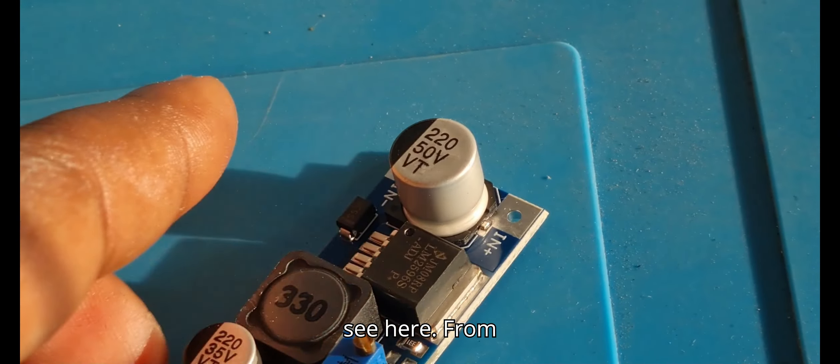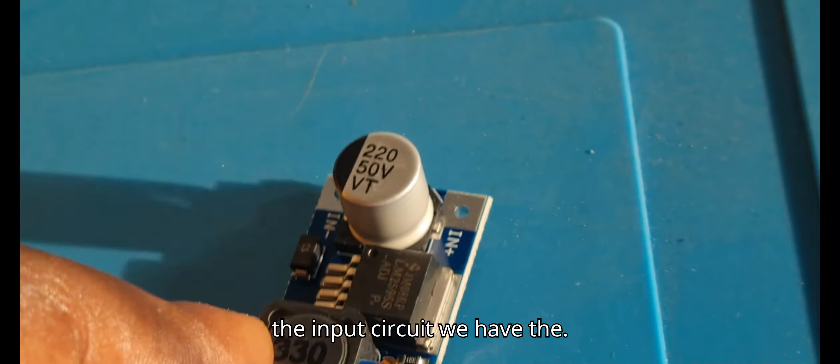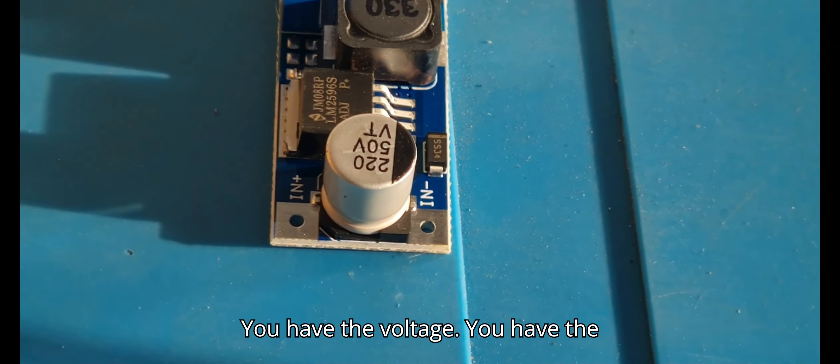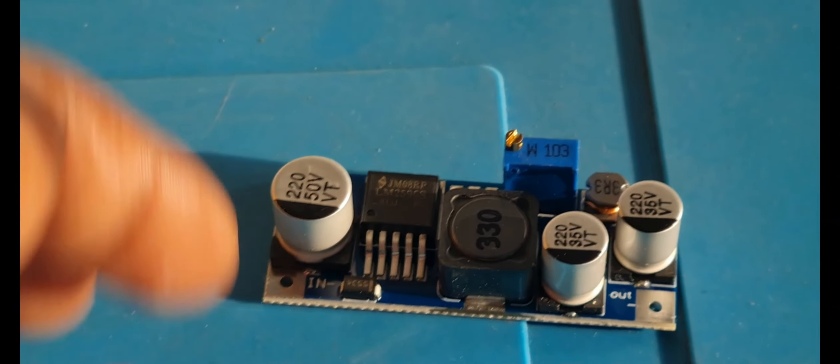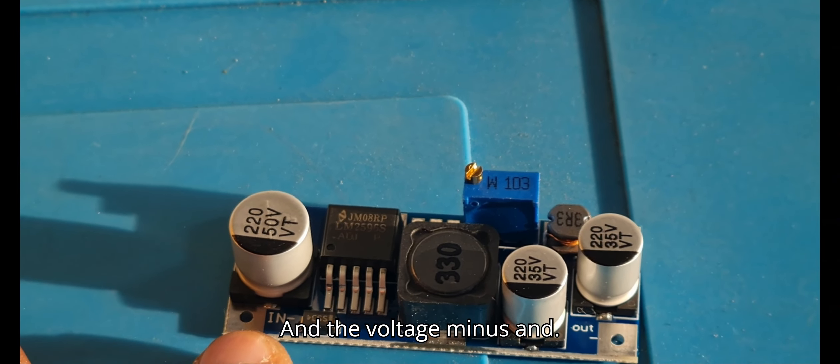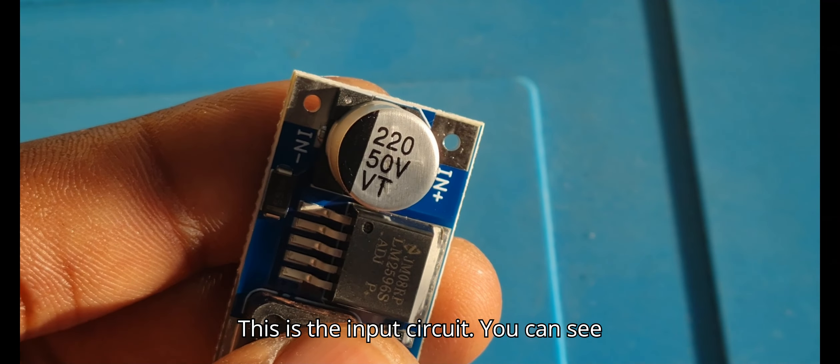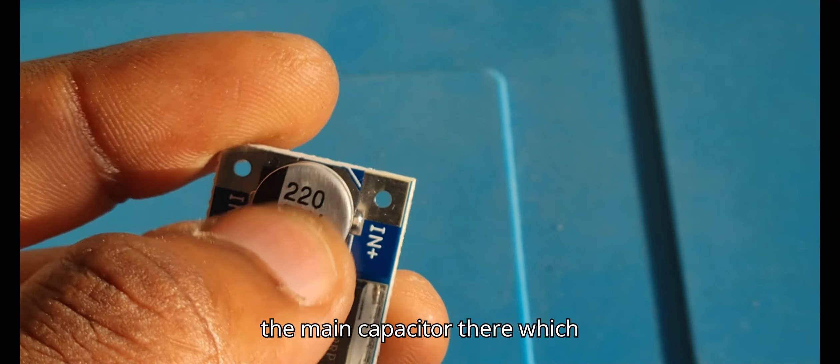So as you can see here on the input circuit, you have the voltage in and the voltage minus. This is the input circuit, you can see the main capacitor there,